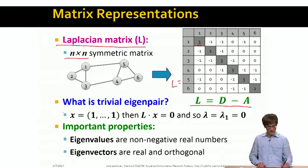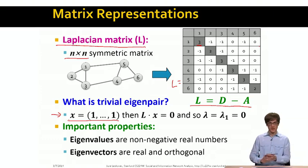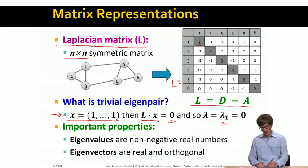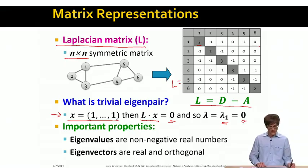What this basically means is that we have already found a trivial eigenpair. So if we have a vector x of all values of 1, then L times x is simply the sum of the labels of my neighbors. All my neighbors have entry minus 1, so I get minus d. On the diagonal I have an entry d. So basically it means that L times x equals 0, which means that lambda 1, the smallest eigenvalue of this adjacency matrix, equals 0.